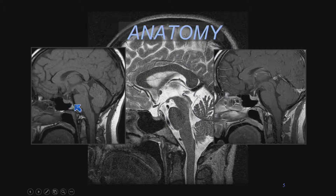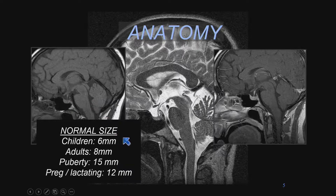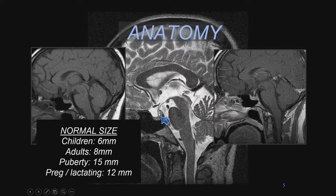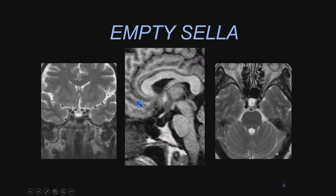The sella itself is typically under a centimeter in size — in children about 6 millimeters, in adults 8 to 10 millimeters. During puberty it can swell a bit, and instead of having a flat or slightly concave superior margin, we often see a convex superior margin in normal individuals during puberty or when they're pregnant or lactating. Measuring and documenting its size is helpful. It's not uncommon to see it flattened — the so-called empty or partial empty sella, where the glandular tissue is flat.